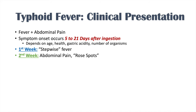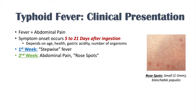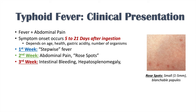In the second week, we see abdominal pain and rose spots — small, usually one to five millimeter blanchable papules on the skin. If you press on them they disappear but then reappear. In the third week, symptoms worsen: you see intestinal bleeding such as hematochezia and melena, hepatosplenomegaly (enlargement of the liver and spleen), and potentially intestinal perforation due to the proliferating bacteria within the submucosa.